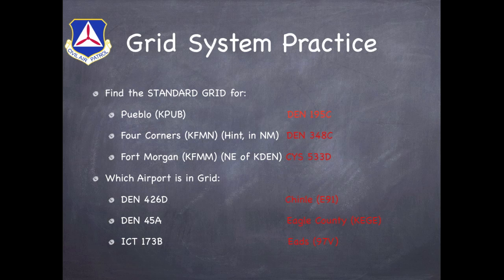Now that you've had a couple of moments to look for these, the designators you should have come up with for Pueblo would have been Denver 195 Charlie. Four Corners Airport — again on the Denver sectional, even though it's down in New Mexico — would have been Denver 348 Charlie. Fort Morgan, even though it's right there in Colorado, is actually on the Cheyenne sectional: Cheyenne 533 Delta. Furthermore, the three airports that you should have found are Chinle Echo 91, Eagle County, and Eads 97 Victor.